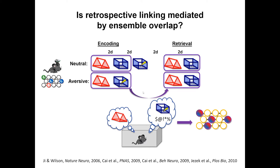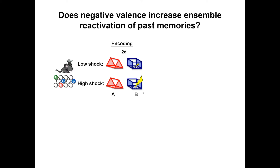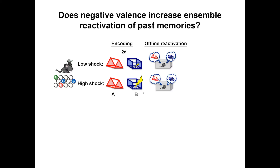We hypothesized that maybe after an aversive experience, the brain not only reactivates what you just learned, but also reactivates prior memories — and this might be what links them. Andre Fenton's work showed that after stress, depending on the level, it can open a critical window in which you can manipulate a past memory. This all suggested that during some offline period, there's not only reactivation of the recent experience, but the brain searches for other past experiences related to it. To test this, Joe Zaki did a calcium imaging experiment comparing animals that received a low shock or a high shock in a second context.